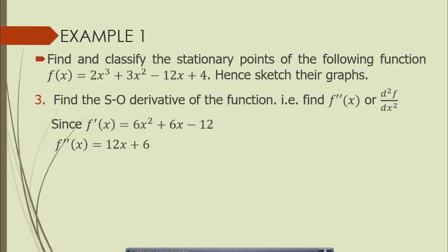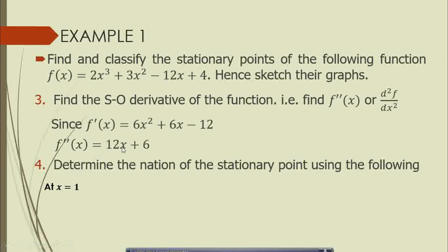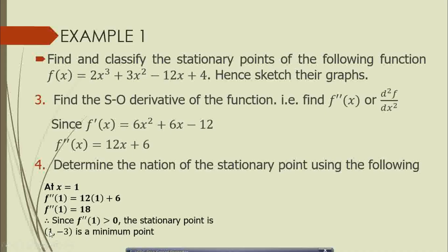We have two x-coordinates: 1 and -2. Starting with x = 1, we substitute into the second order derivative: 12(1) + 6 = 18. Since f''(1) = 18, which is positive and greater than zero, the stationary point (1, -3) is a local minimum point.